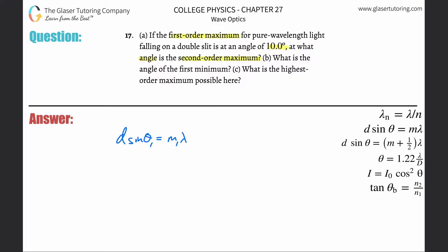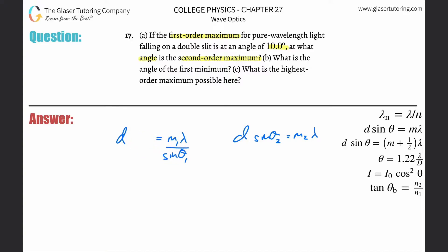The wavelength is also going to be constant. So we have d·sinθ₂ = m₂·λ. We can solve for either d or λ since both are constant. Let's divide out the sine of theta for the first order to solve for d. That d we just solved for is equivalent in both equations, so now we plug that into the second equation: d = m₁·λ / sinθ₁.